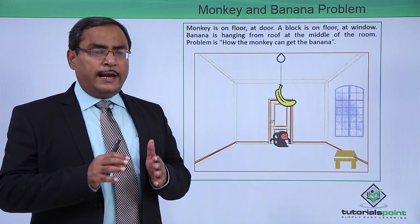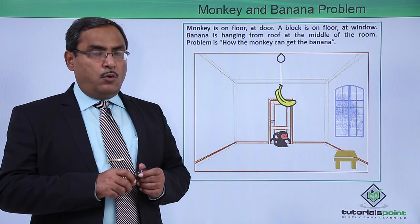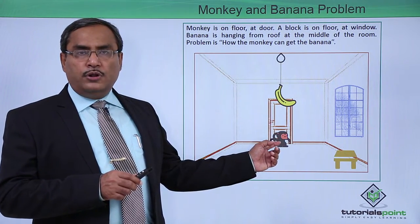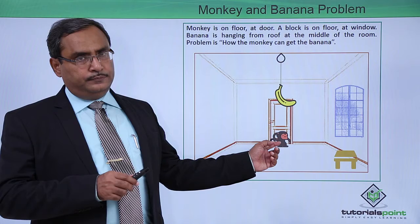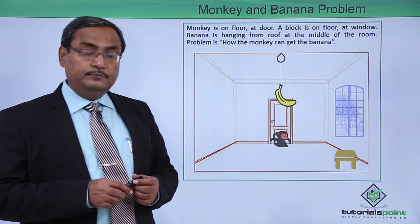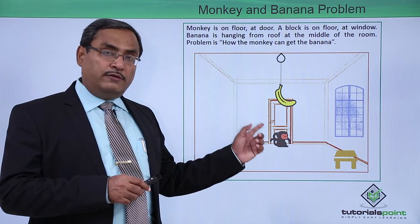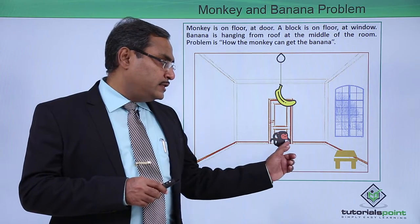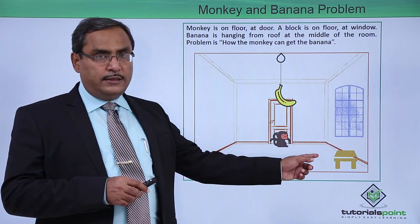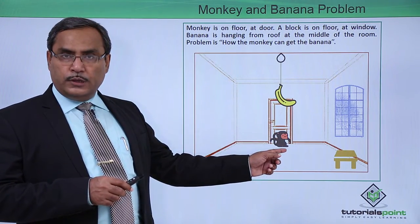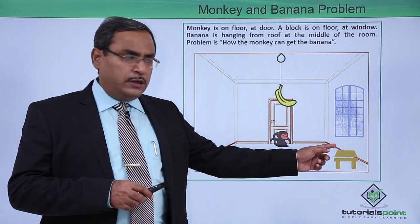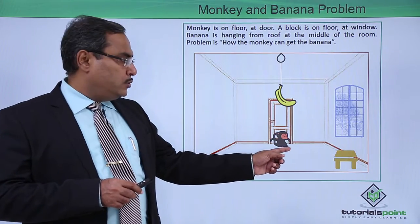The monkey can perform a set of operations. When the monkey is on the floor, it can walk — from the door to the window where the block is, since the monkey was at the door initially. When the monkey reaches the block on the floor, it can drag or push the block to the middle of the room.